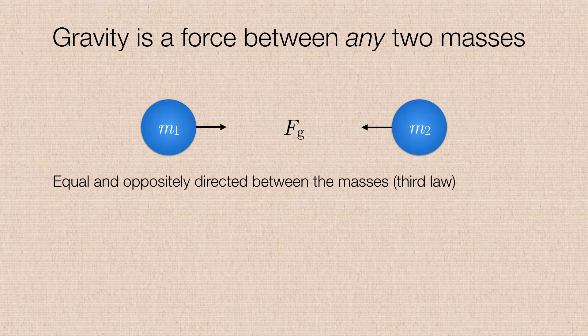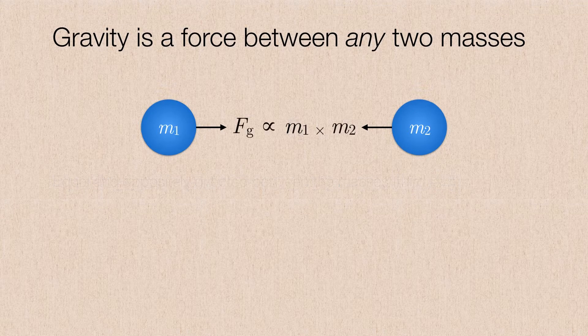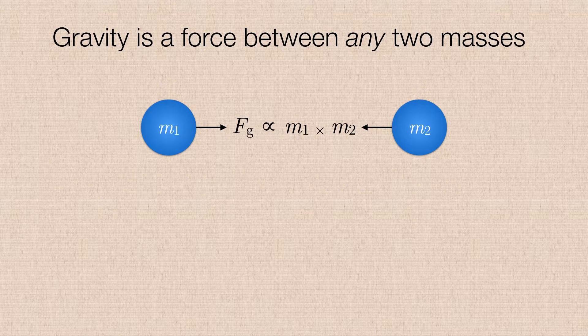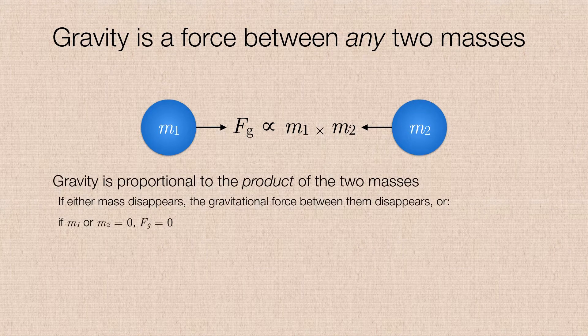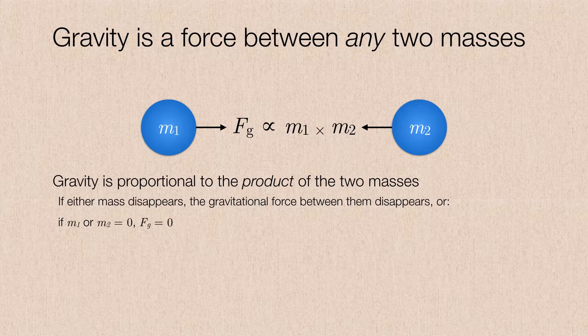Since these forces are equal and oppositely directed, that means that both masses are required to generate this gravitational force. So we could say that this gravitational force is the product of the two masses. If we were to set one of these two masses to zero, then there would, by definition, be no gravitational force between the two.